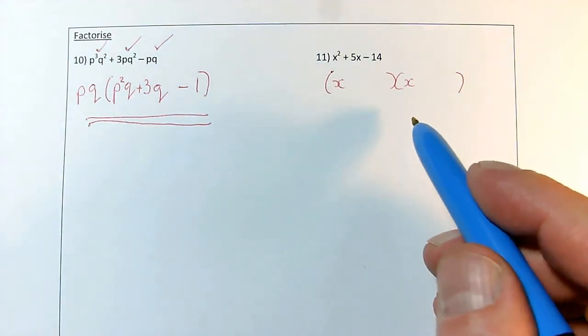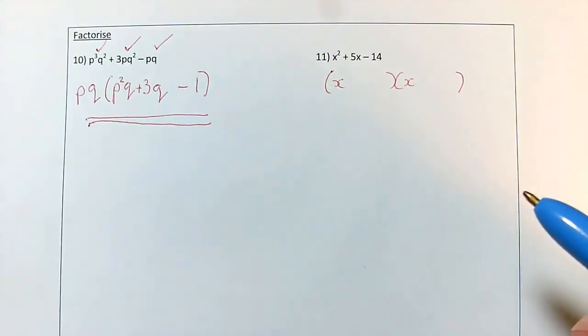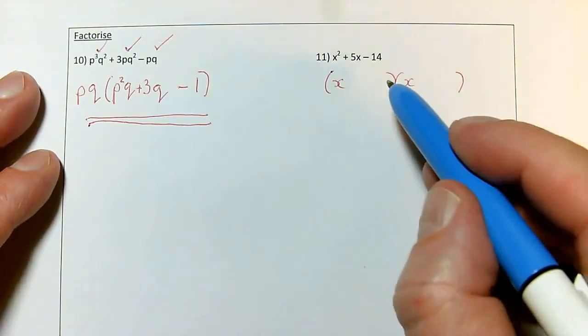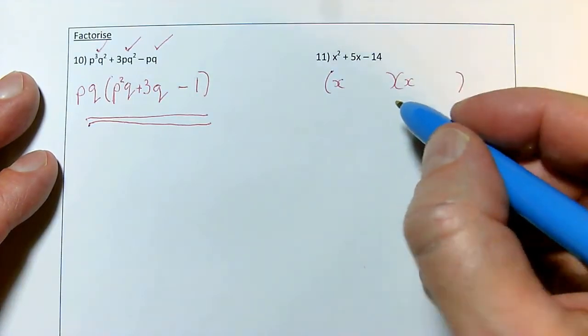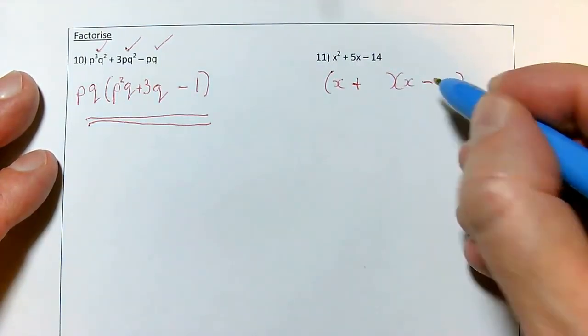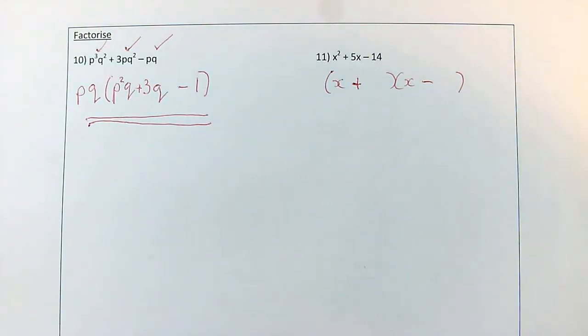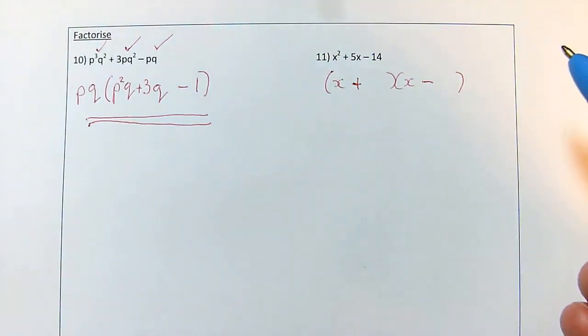Now, quadratic factorising is probably something that you've practised a lot. The main thing is, after you've got what you think is the answer, to double-check it works. So what I'm looking for, this number times this number, I've got to multiply to give minus 14. So the only way I can get a minus is having a plus and a minus. And there aren't that many different ways to make 14. It's either 1 times 14 or 2 times 7. 1 times 14 is never going to give me a 5, so it's got to be the 2 times 7 version.